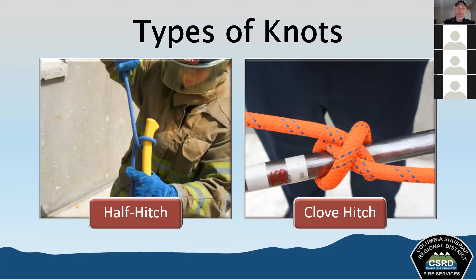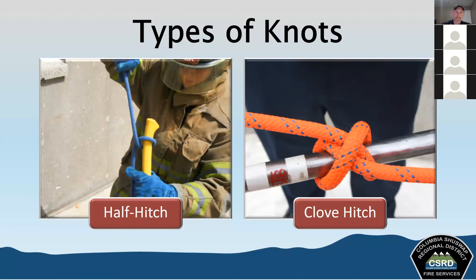A half hitch is useful for stabilizing long objects being hoisted. It's never used by itself — always combined with other knots or hitches. A half hitch is formed by making a round turn around an object and the standing part passes under the round turn on the opposite side. The clove hitch is essentially two half hitches. Its principal use is to attach the rope to an object. It's not appropriate for life safety applications. A clove hitch can be formed anywhere in the rope and can be done around an object or slid onto one.